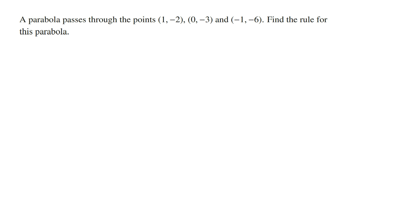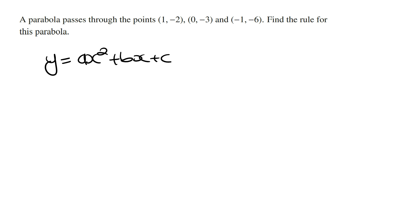To find the rule of a parabola whenever you're given the coordinates of three points, what you need to do is use the general rule of a parabola in the form y = ax² + bx + c. To find the values of a, b, and c, we sub the three coordinates into the general rule to obtain three equations in terms of a, b, and c, and then solve simultaneously.